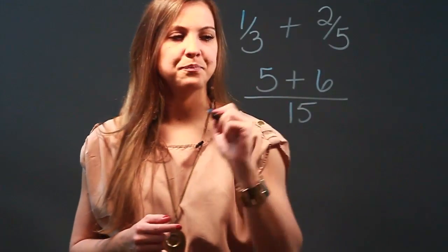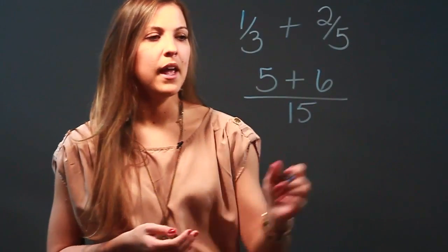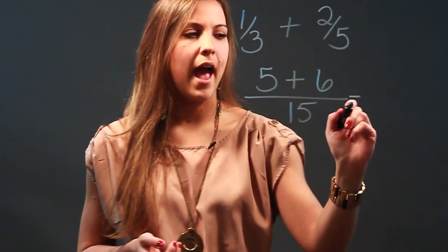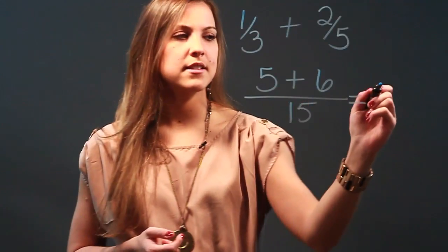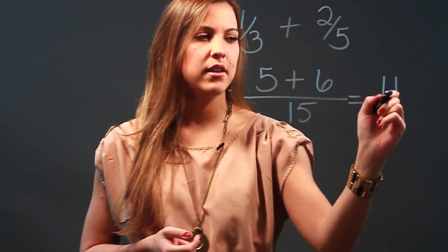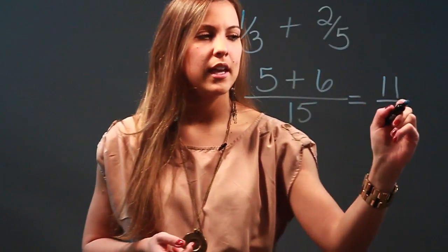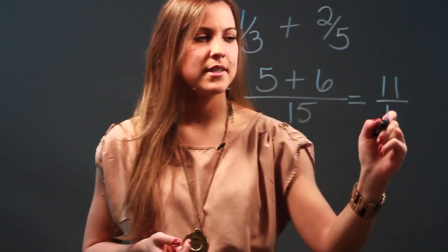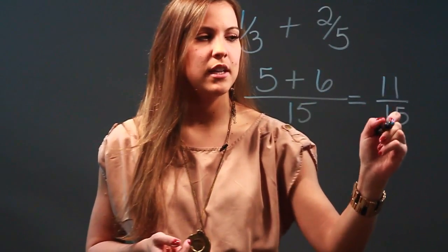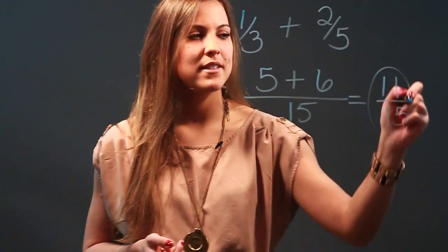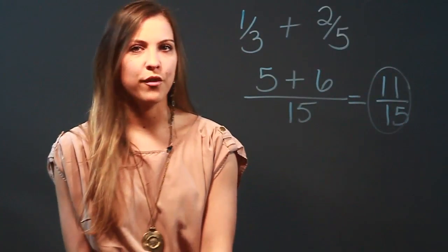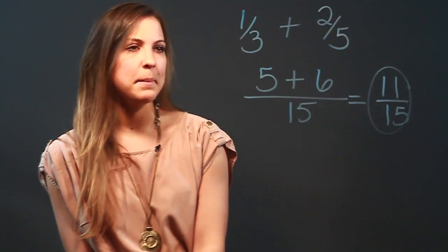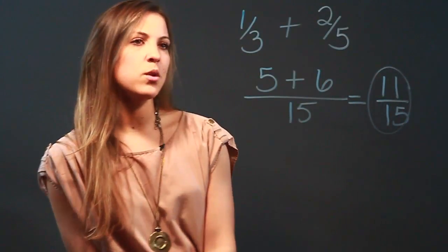I'm going to go ahead and add the numerators, so five plus six is eleven. Keep my denominator, which is fifteen, so my sum is eleven over fifteen.